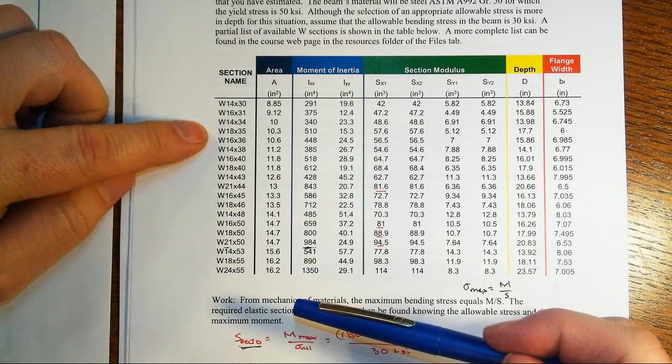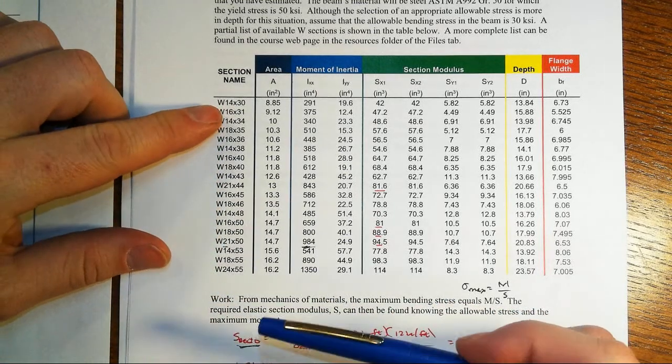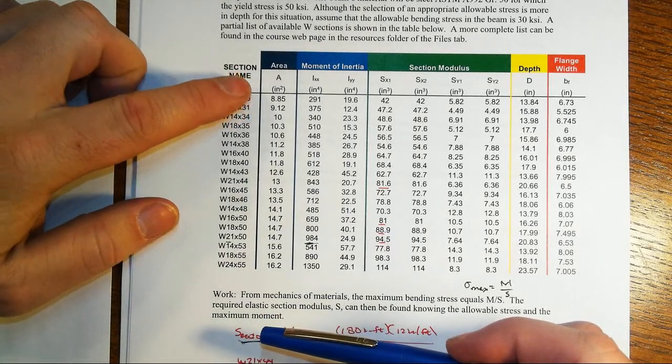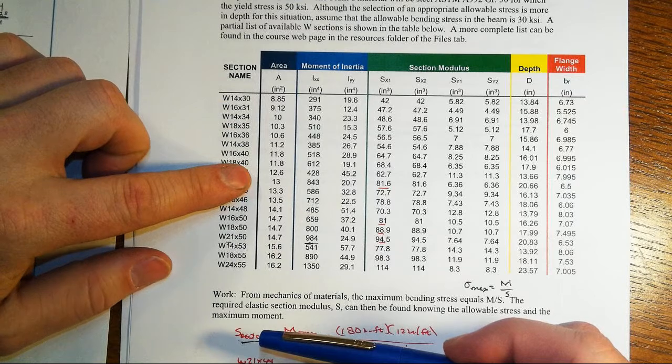These are organized from least weight to biggest weight. You've got 30 pounds per foot ranging all the way up to 55 pounds per foot. A W14 is about 14 inches deep and the 24 would be about 24 inches deep. And so, of course, with that increase in self weight, you've got more area in the cross-section. You see that reflected here as well.